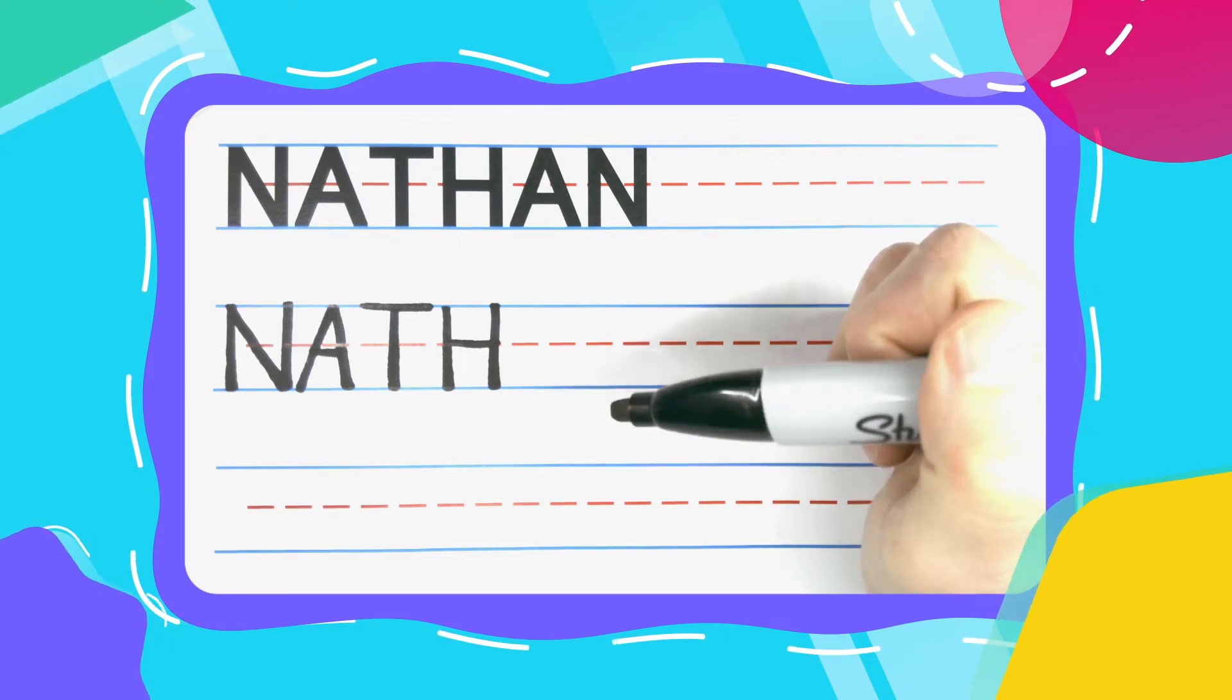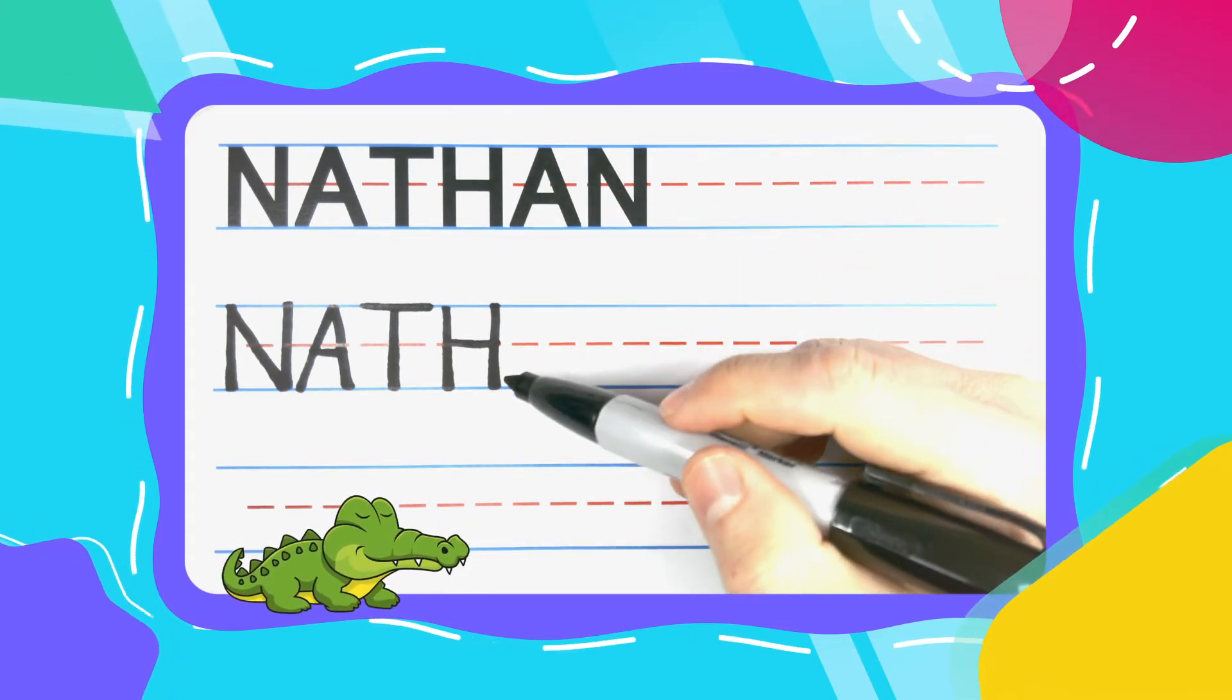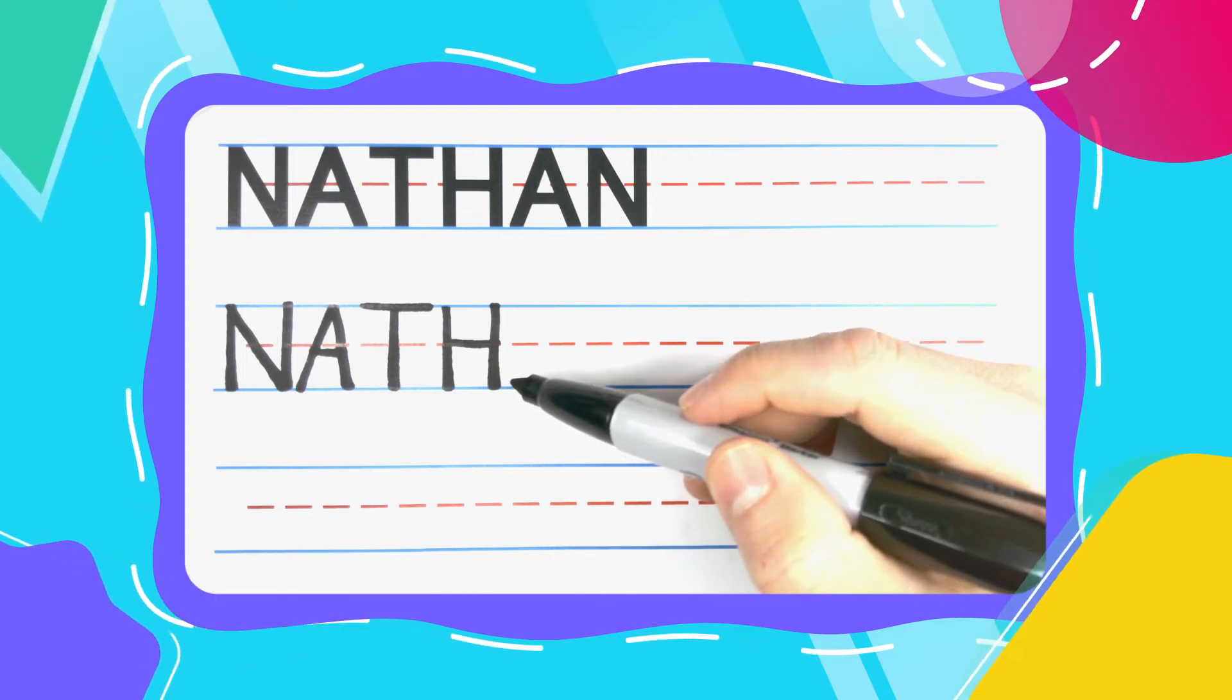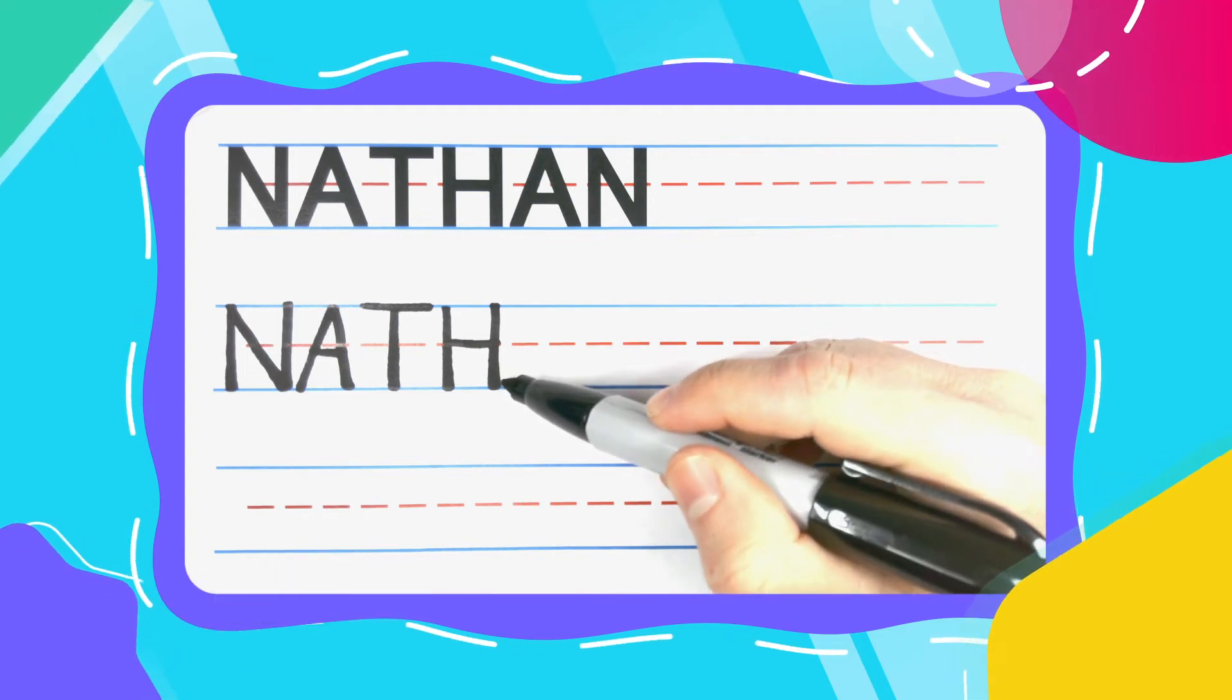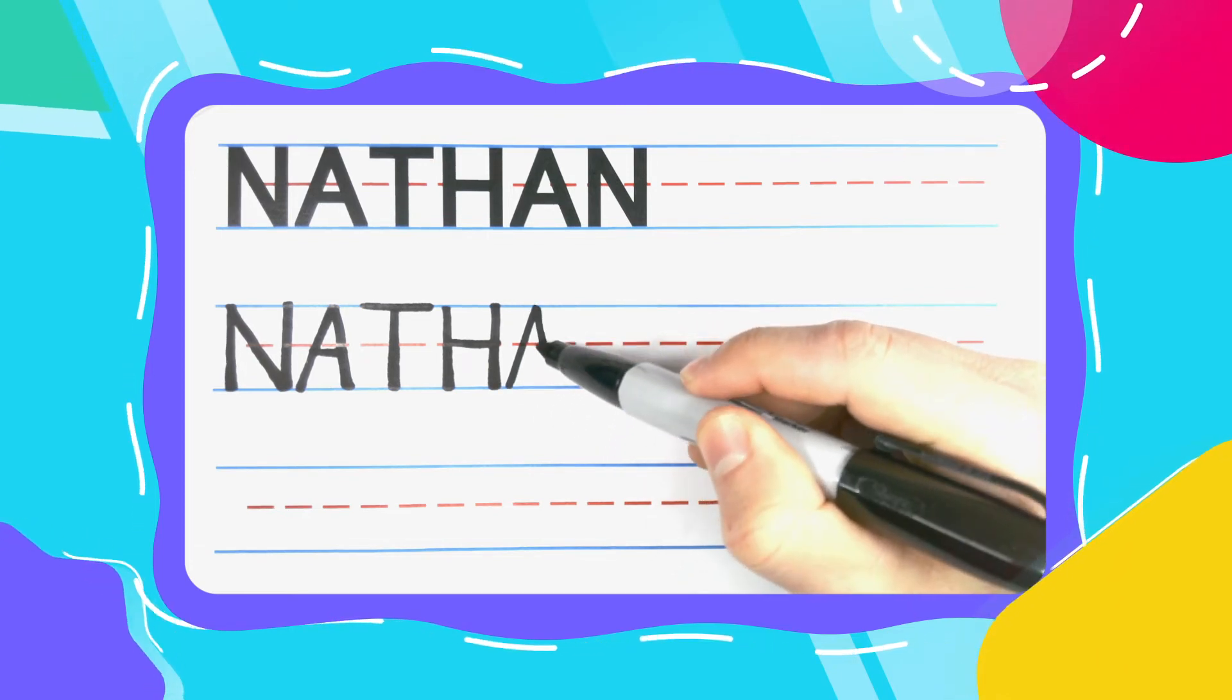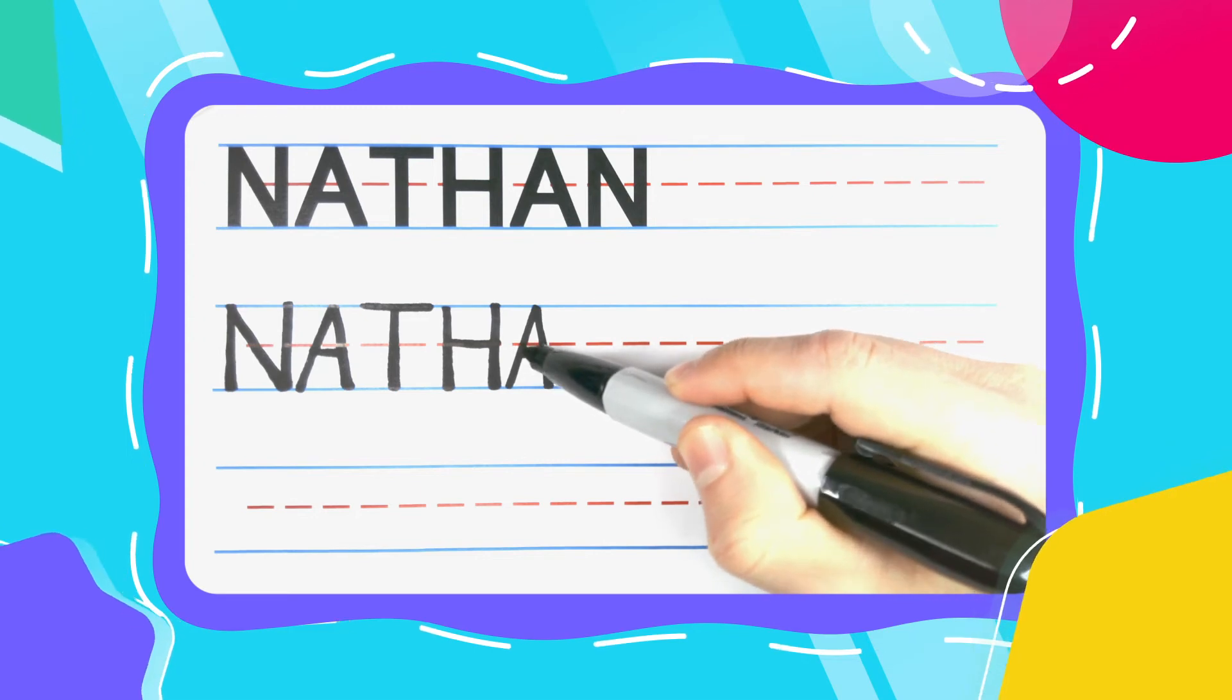The next letter in Nathan is another A. We're going to draw it the same way we drew the first alligator A, except a little faster. Diagonal up, diagonal down, alligator teeth.